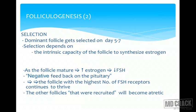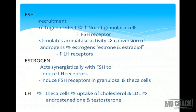The dominant follicle is selected on days 5 to 7. Selection depends on the intrinsic capacity of the follicle to synthesize estrogen. As the follicle matures, there is increased estrogen and decreased FSH — a negative feedback on the pituitary. The follicle with the highest number of FSH receptors continues to thrive, while the other recruited follicles become atretic. FSH has a mitogenic effect: it increases the number of granulosa cells and increases FSH receptors.